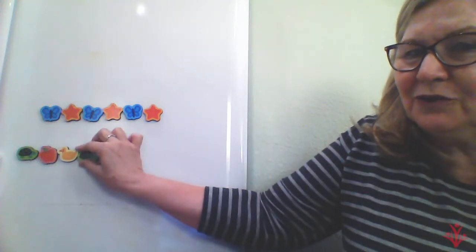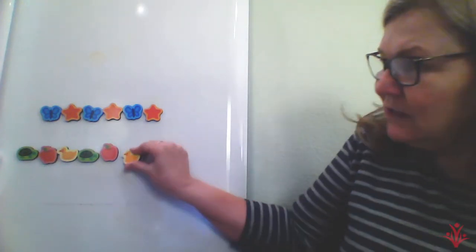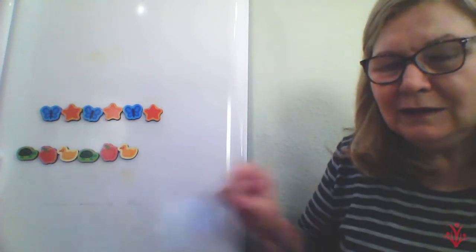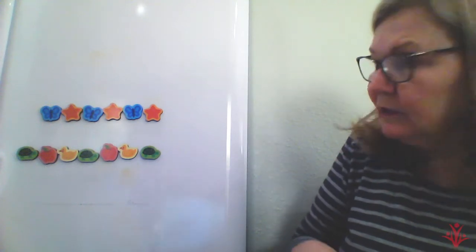Did you say turtle? You're right. And then what comes next? A red apple — did you say red apple? And what's next? A yellow duck — did you say yellow duck? You are right. So we're repeating after three objects. Then what's next? You say a green turtle. You're right. And then what's next?